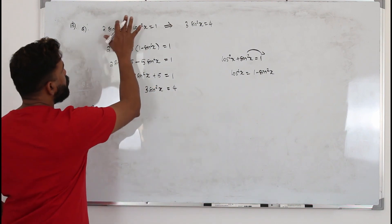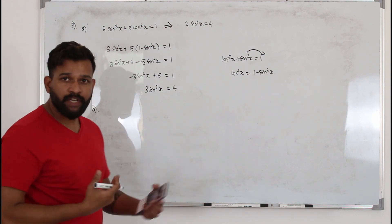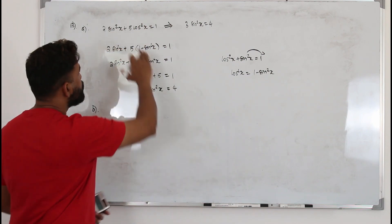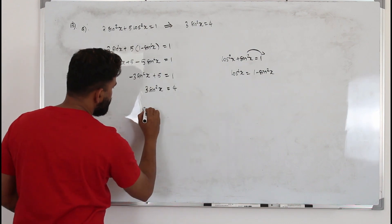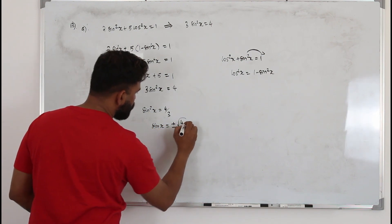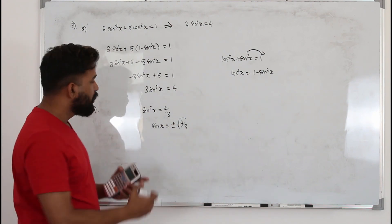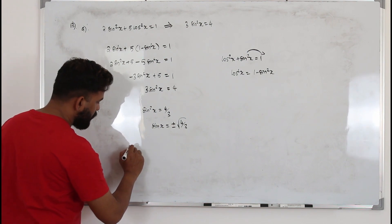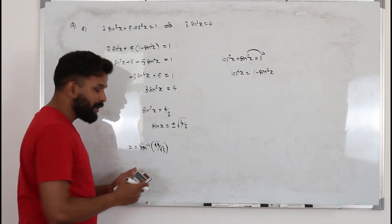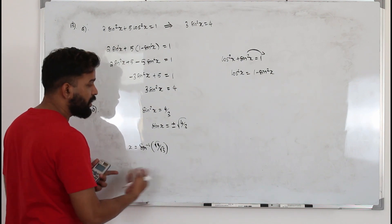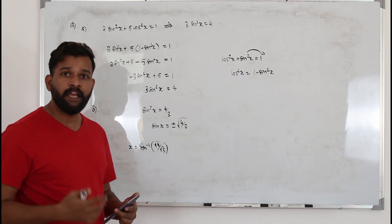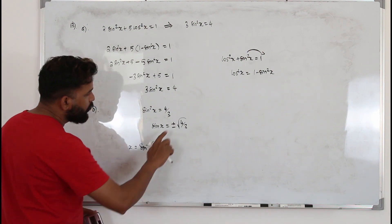In part B, they want you to prove this equation has no solution. Using the result from part A: sin²x = 4/3. Taking the square root: sin x = ±√(4/3). When we try to find the principal value with sin⁻¹(√(4/3)), we get a math error on the calculator — but we need to write the proper mathematical reason.